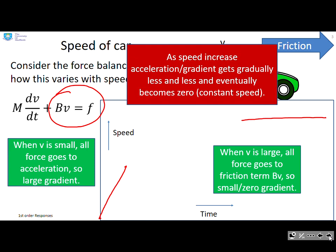Now as the speed increases, so as the Bv term gets bigger, the Bv term takes more and more of the f, and so the dv/dt gets smaller and smaller. So you see the gradient gradually decreases. So we're going to end up with a curve that starts with maximum gradient and then moves to a zero gradient, a bit like that.